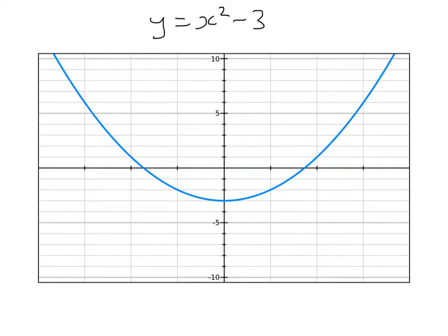Here's the graph of y equals x squared minus 3, and no real surprise to know that minus 3 shifts the whole thing down by 3. 0 squared take away 3, 1 squared is 1 take away 3 is minus 2, and so on. So putting a minus 3 at the end shifts the whole graph down by 3.